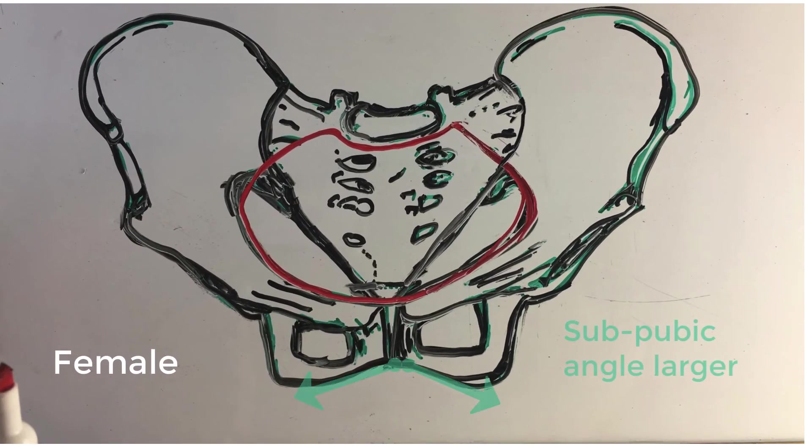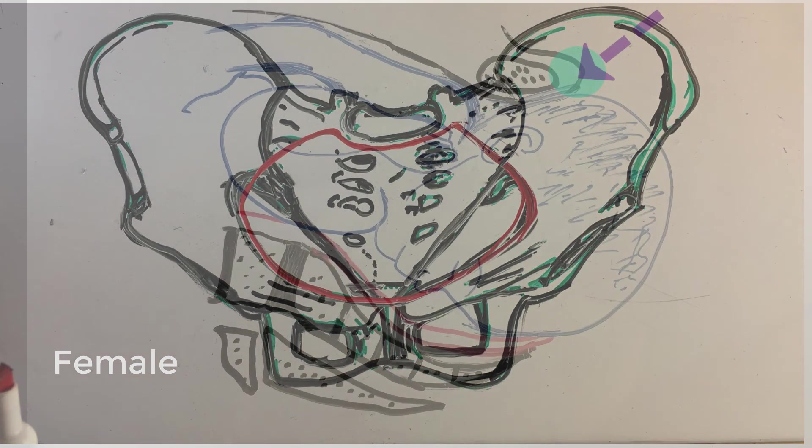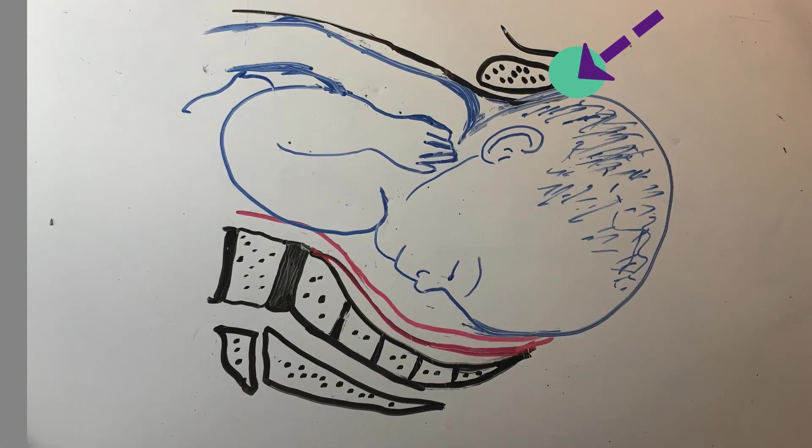Finally, the sub-pubic angle is much larger in the female as the baby's head pivots underneath the pubic arch, forcing it to unflex its head, as we have seen in an earlier video.